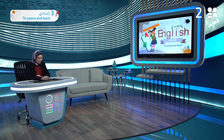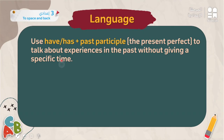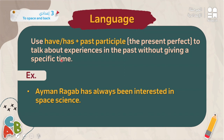Here is the grammar part: the difference between the present perfect and the present perfect continuous. We use 'have' or 'has' plus the past participle — the third form of the verb — in the present perfect to talk about experiences in the past without giving a specific time. For example: 'He has always been interested in space science' — meaning he has always had a passion for space science, without specifying exactly when.